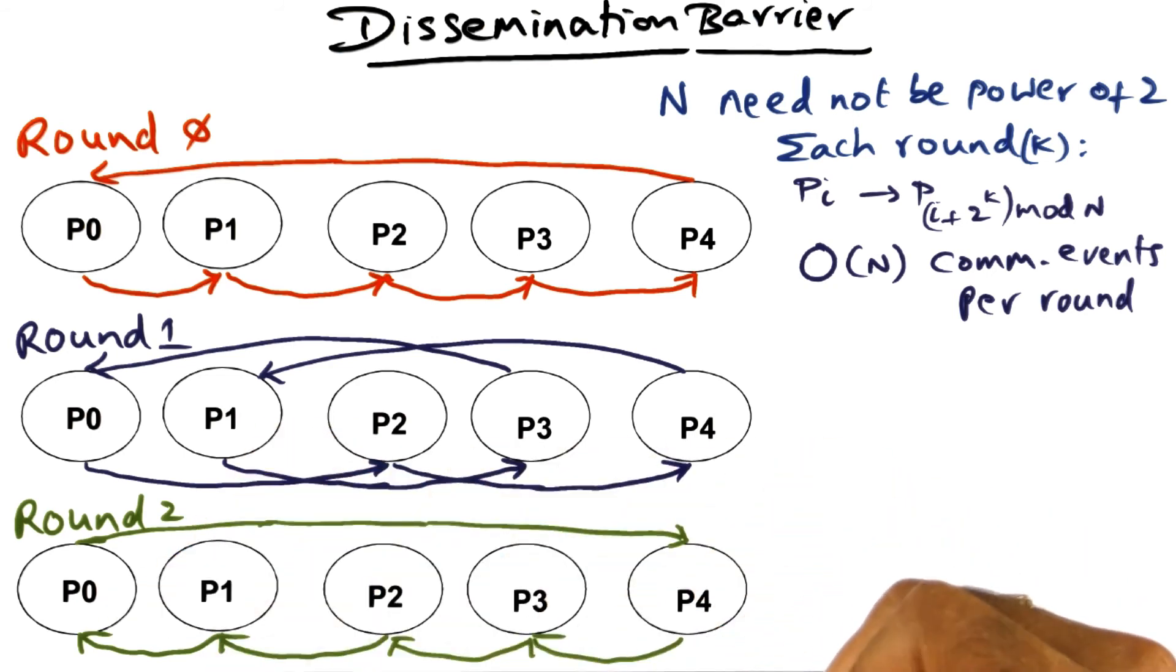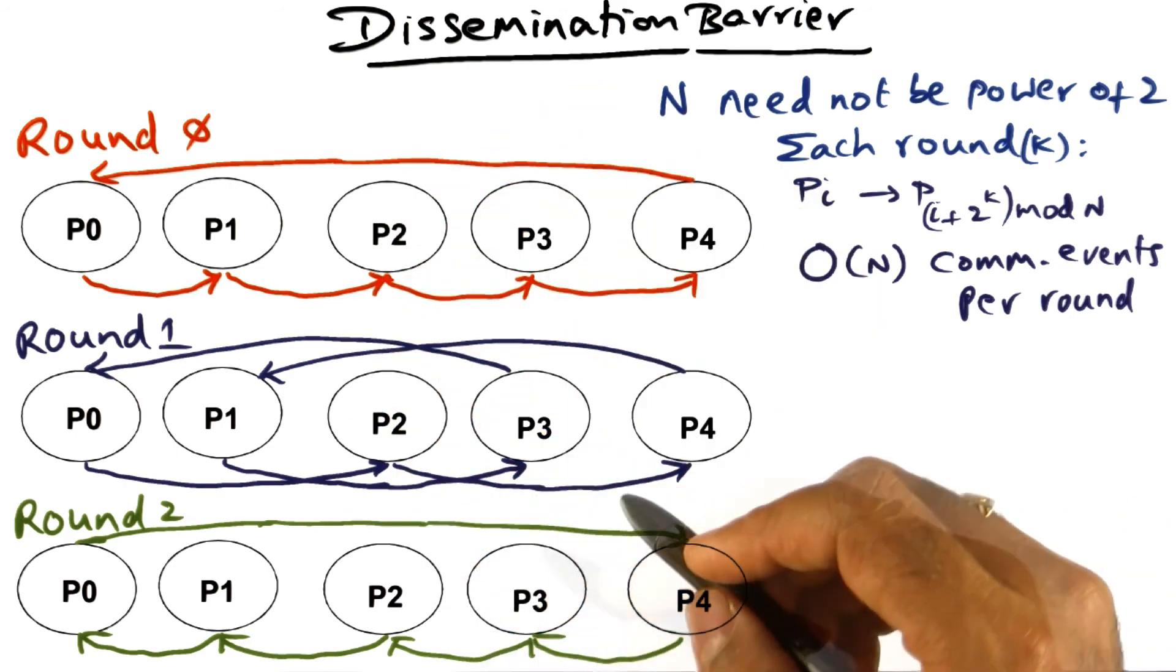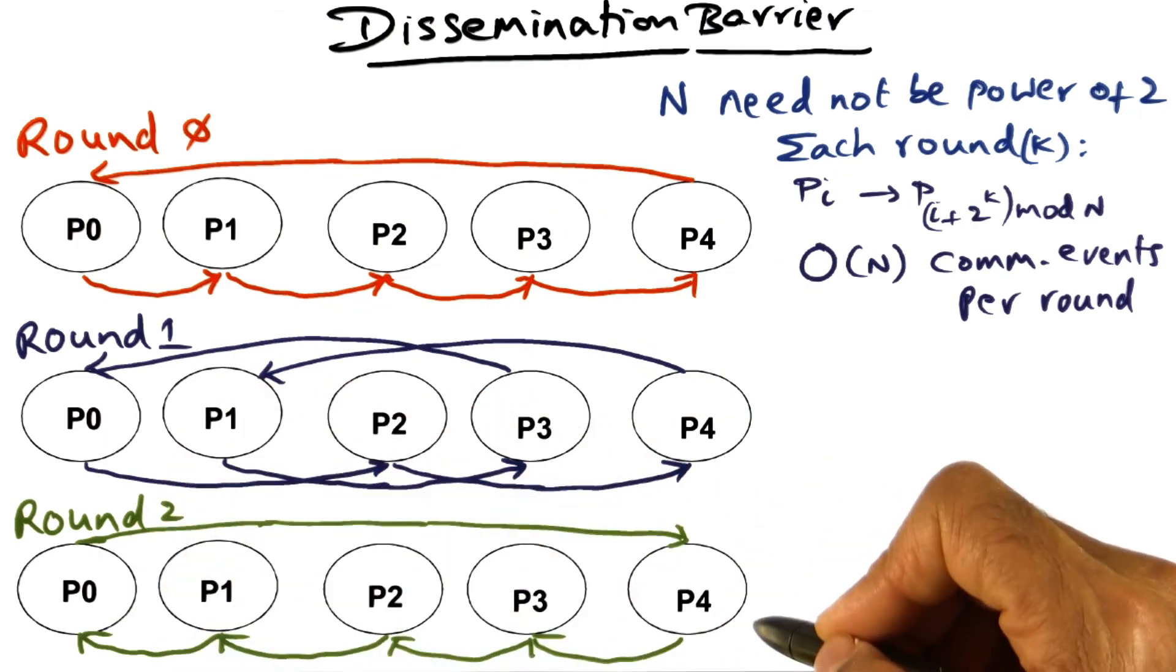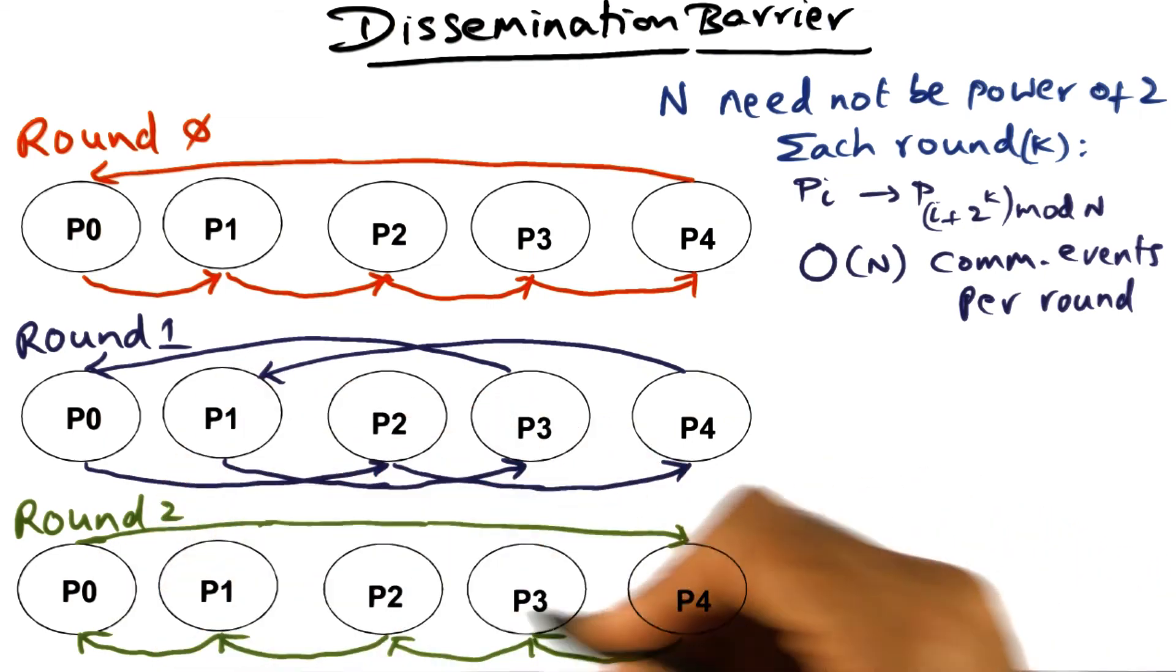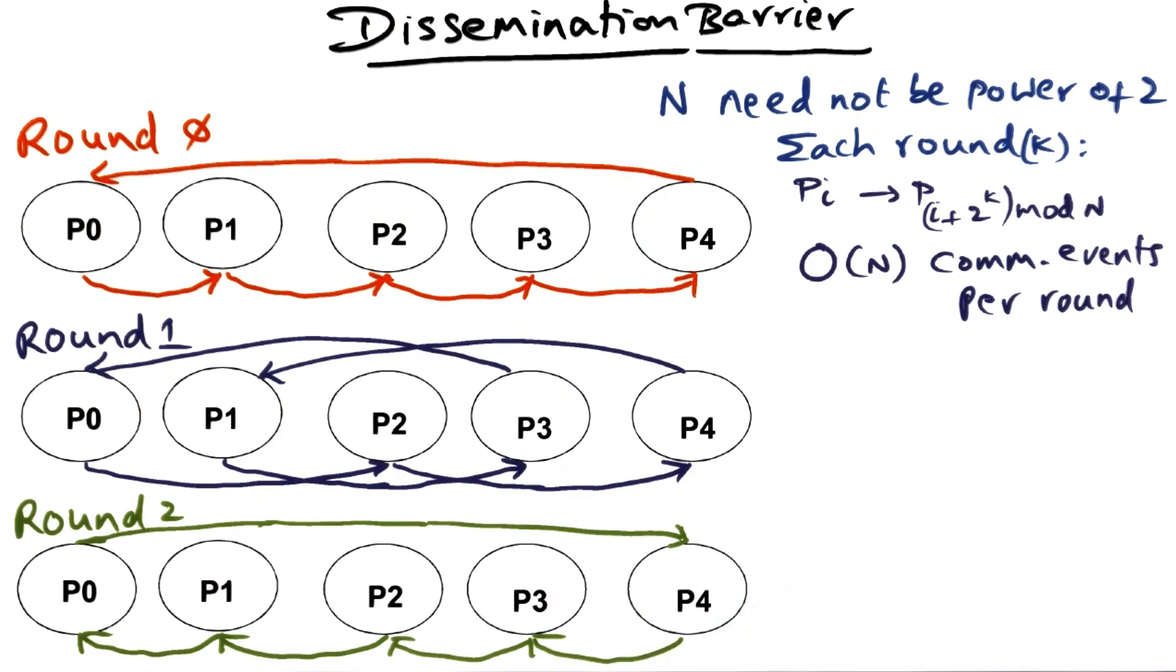At this point, every one of these processors knows that round 2 of gossip is complete. And similar to what I've been emphasizing all along, parallel communication paths in the interconnection network can be fully exploited by the dissemination barrier algorithm.